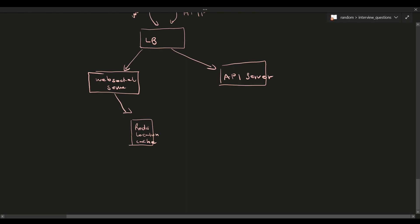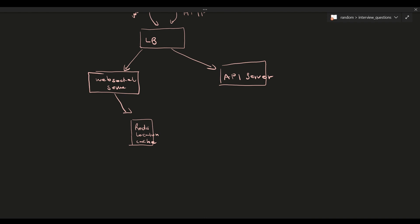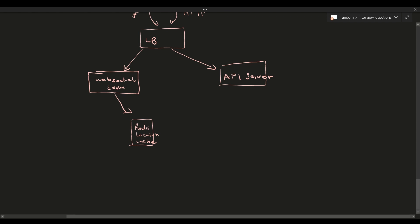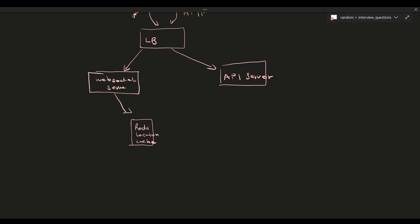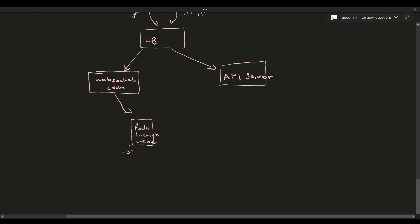Because we refresh location every 30 seconds, we can cache a user's location using a time-to-live (TTL). When the interval arrives, we remove the old cached location and store the new one. This keeps the cache fresh and reduces database reads.